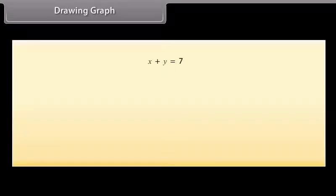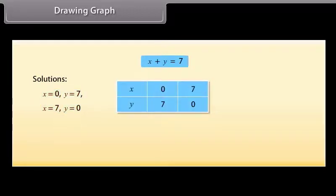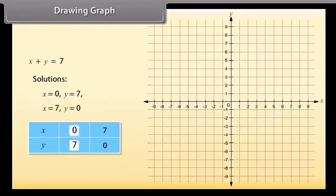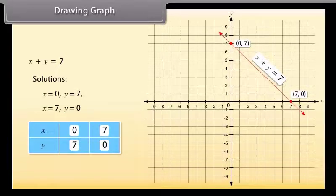Let us now draw the graph of this equation X plus Y is equal to 7. We know that to draw the graph, we need at least two solutions of the equation. So, the two solutions are X is equal to 0, Y is equal to 7, and X is equal to 7, Y is equal to 0. We can use this table to draw the graph. The point for X is equal to 0 and Y is equal to 7 is plotted, and the point for X is equal to 7 and Y is equal to 0 is plotted. Now, join these two points — this is the required graph for the given equation.